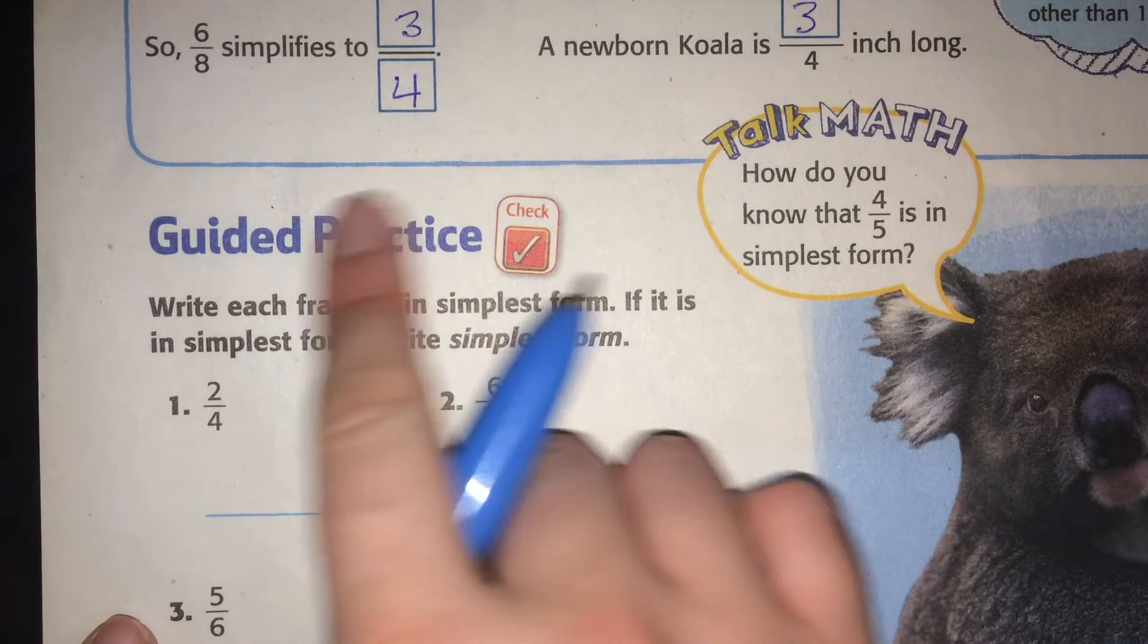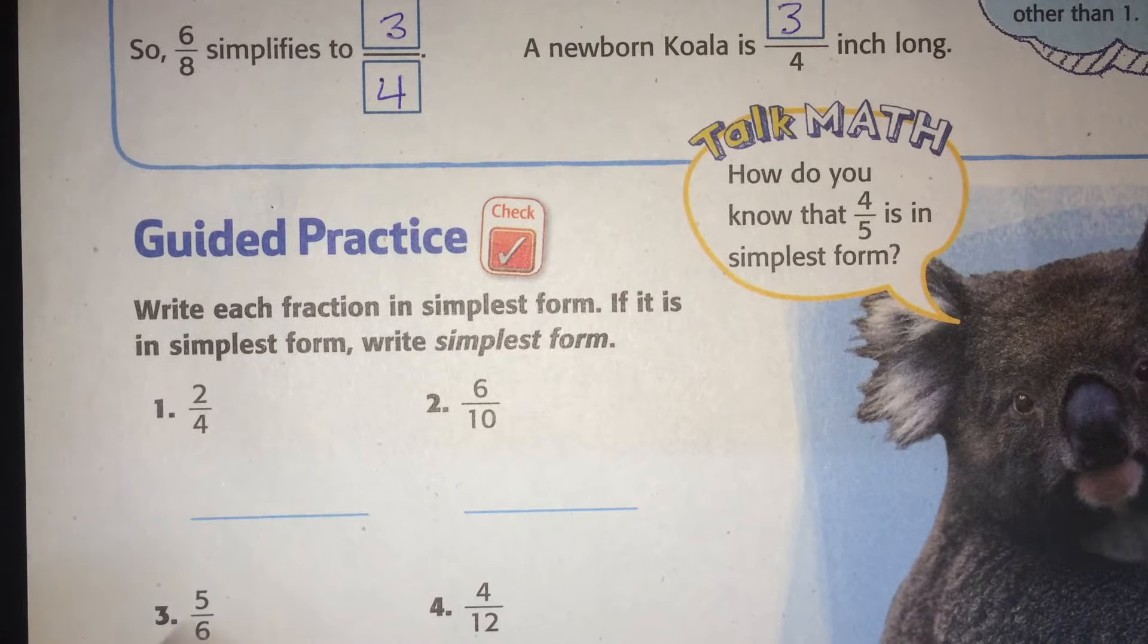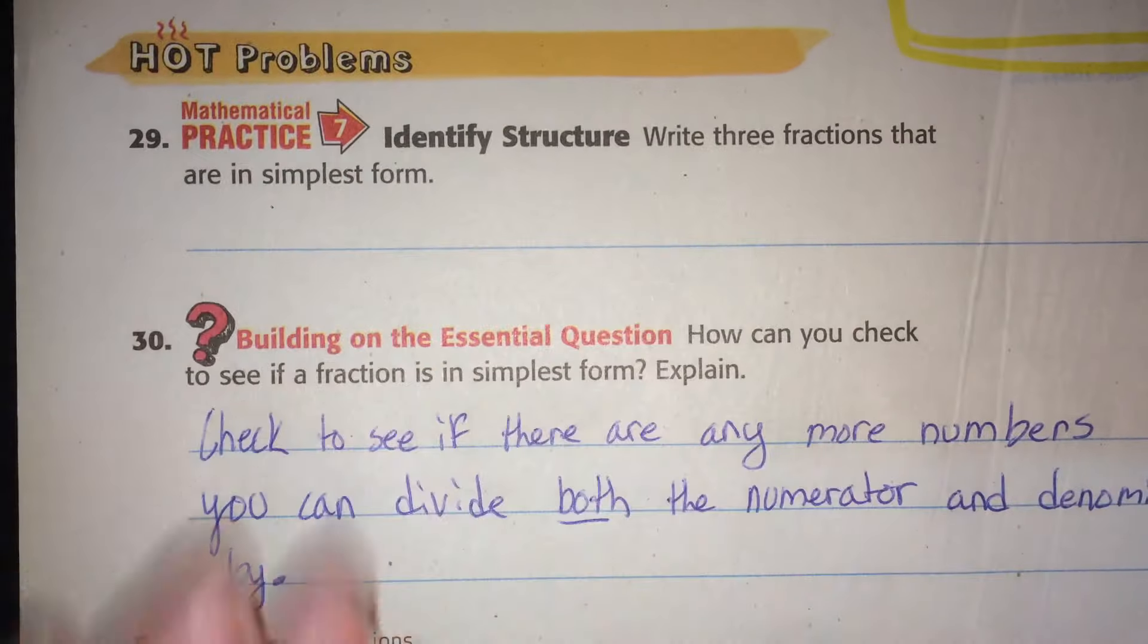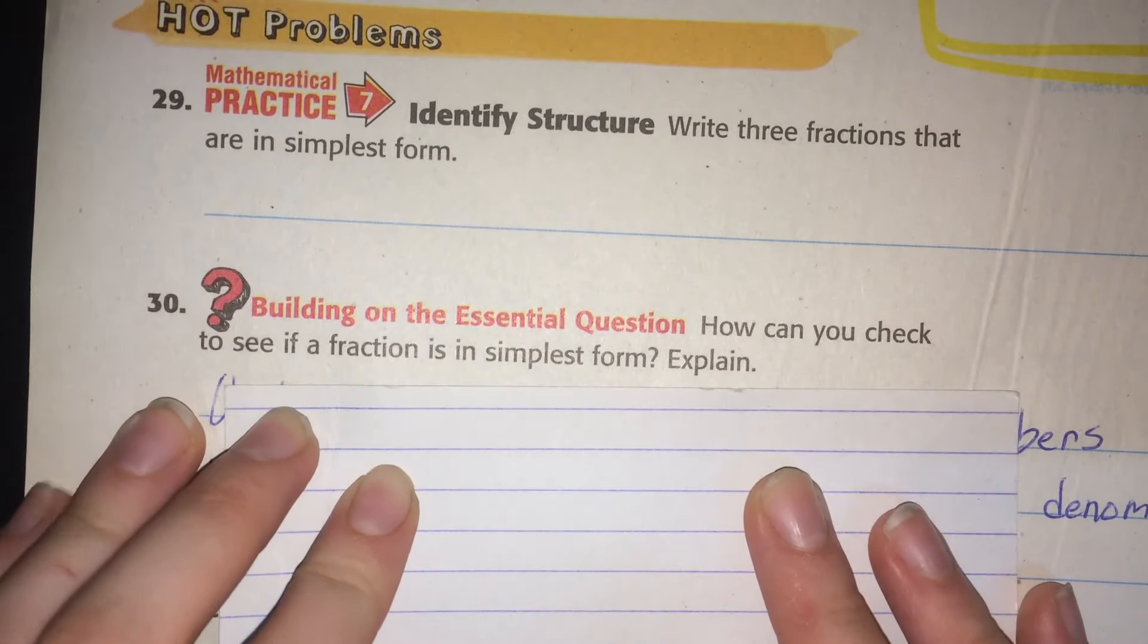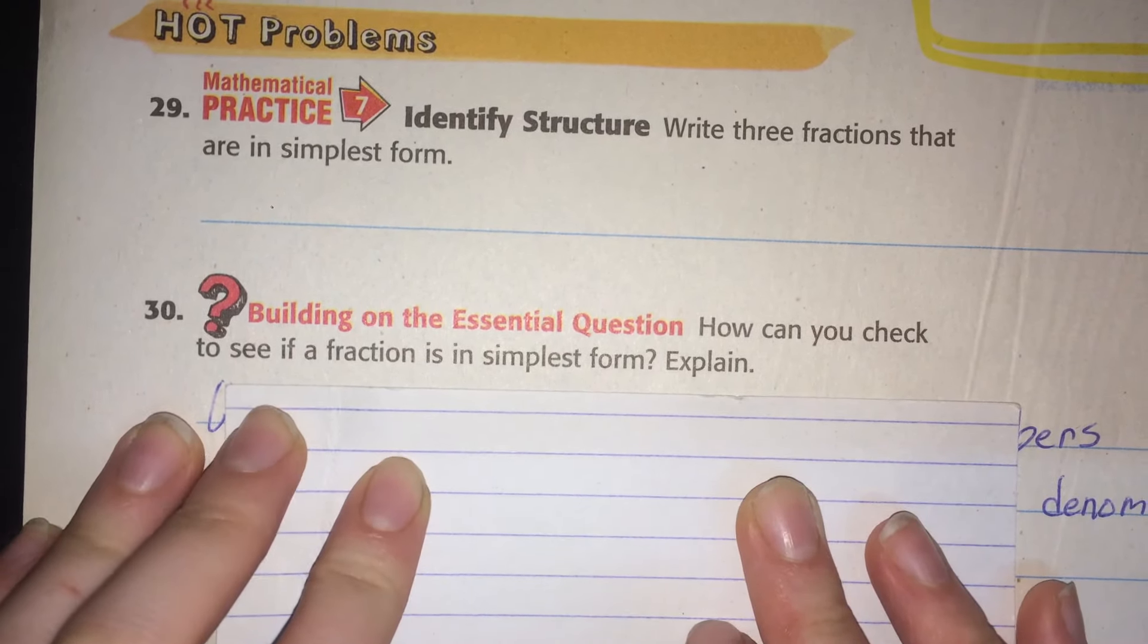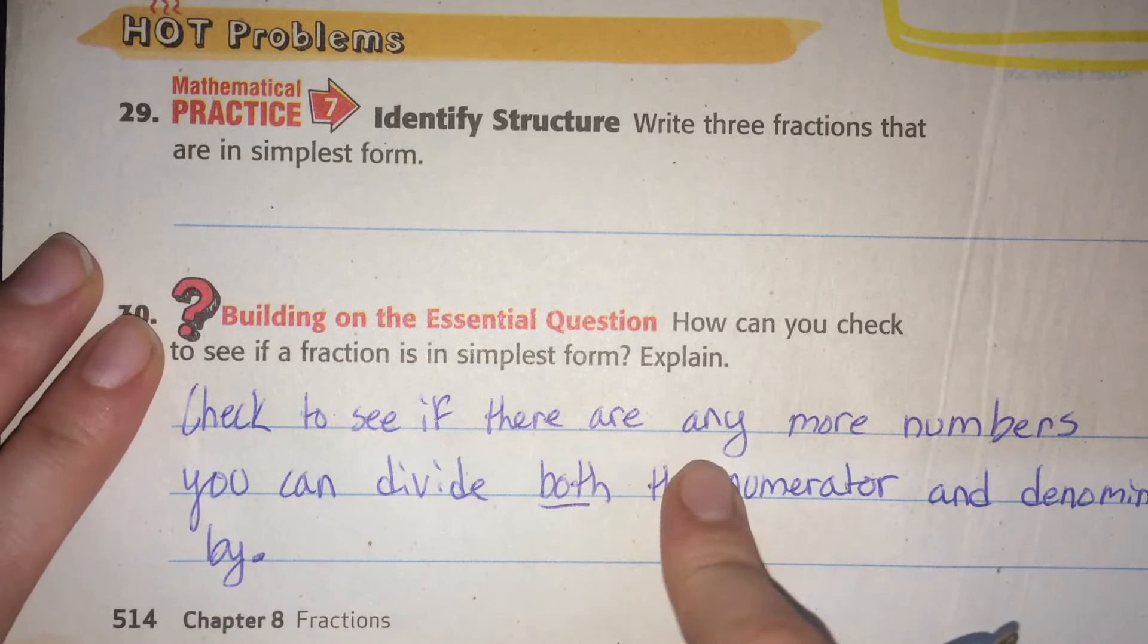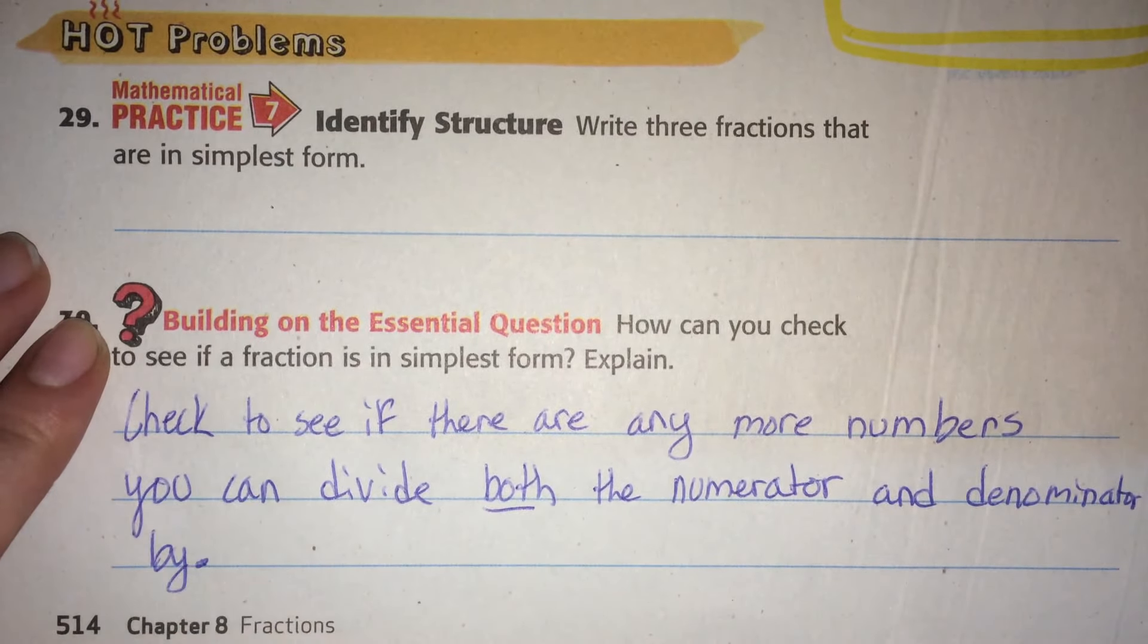In the instructions, when we do it in class, you're going to have to write these fractions in simplest form. And building on our essential question, how can you check to see if a fraction is in simplest form? So how do you check? How do you know if it's in simplest form, if it's as simple as it can get? Well, check to see if there are any more numbers you can divide both the numerator and denominator by. See you in class.